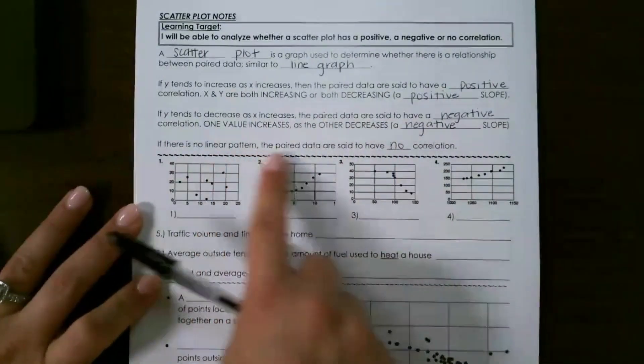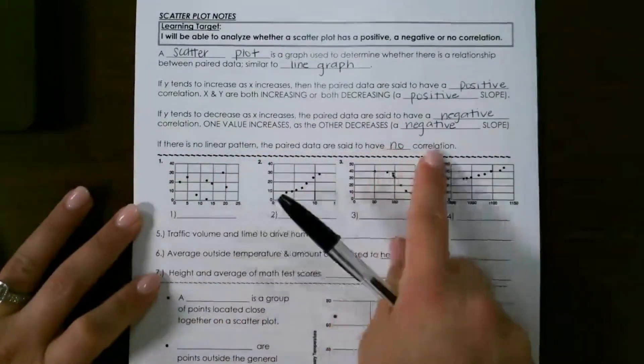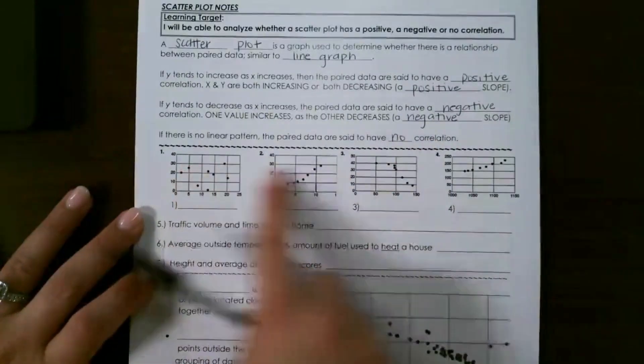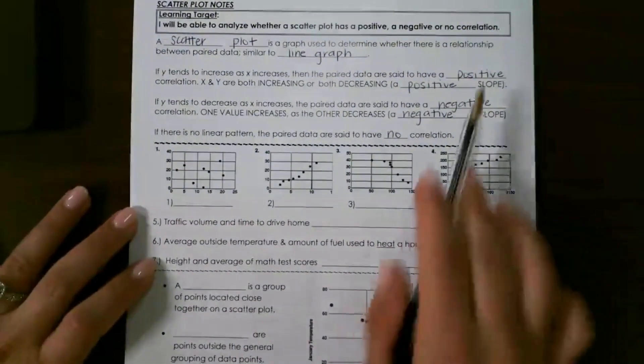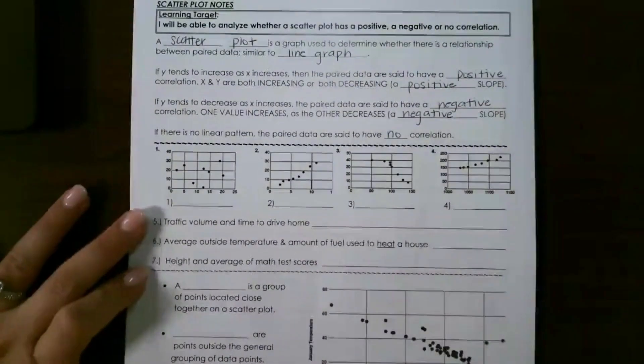If there's no linear pattern, the paired data are said to have no correlation. Look at each of these graphs and see if you can determine whether they have positive, negative, or no correlation.